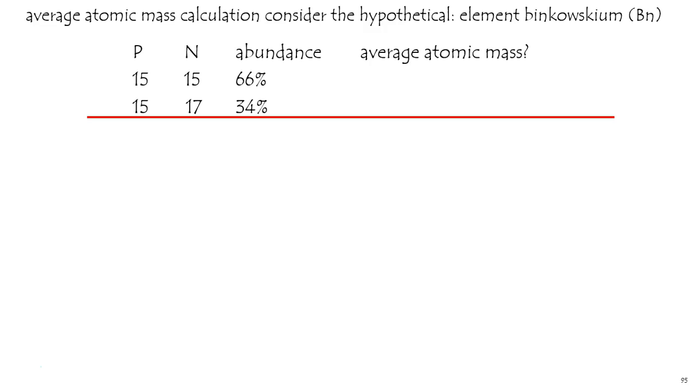So for this hypothetical situation, we would say 0.66 times 30. Sixty-six percent of it is 30, and 34 percent of it, 0.34, is 32. It's going to be closer to the 30 than the 32, and when you pull out the math, you'll get 30.68 amu.